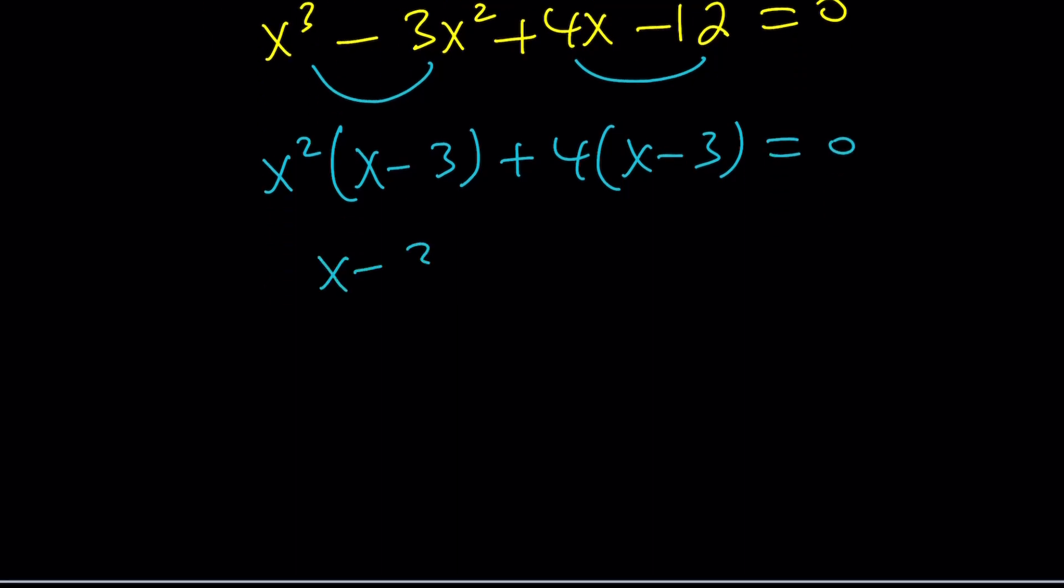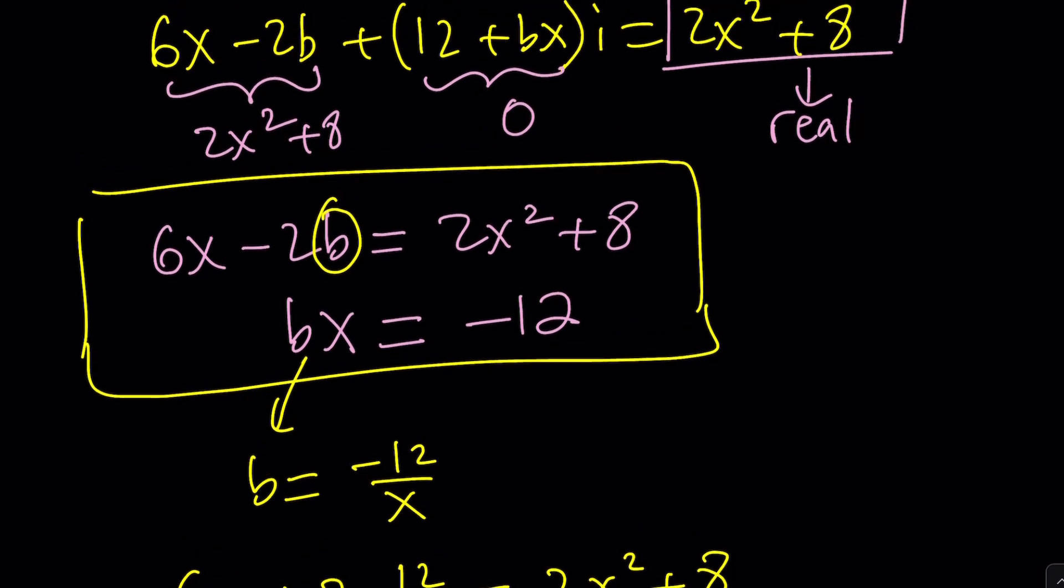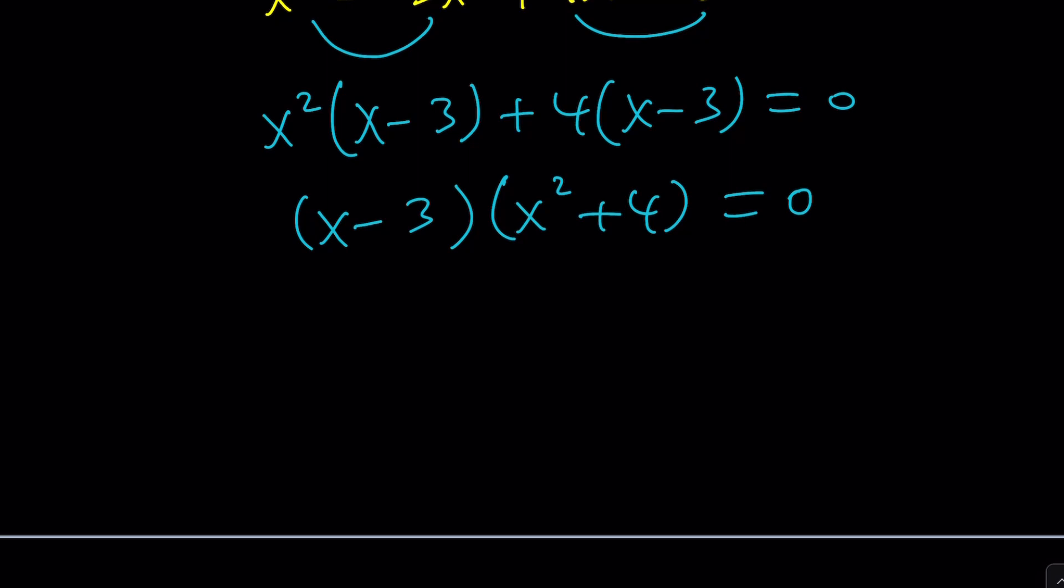You can factor out x squared here. This is factoring by grouping. Not all cubics are that way, but this one is. And now we can take x minus 3 out. x squared plus 4 equals 0. Even though a cubic is supposed to have three complex solutions, we can't take complex non-real solutions because x is a real number. So x equals 3 is the only solution.